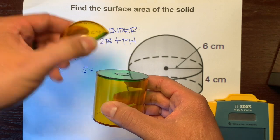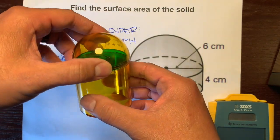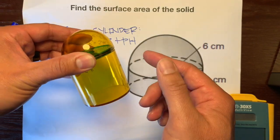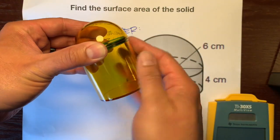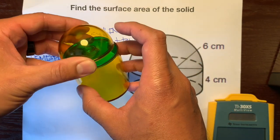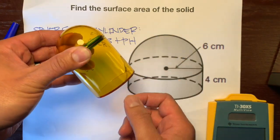But when we take this hemisphere and put it on top, see how it covers up one of the bases for this cylinder. We can't, there won't be any squares on the surface on this base. All the squares would be on the hemisphere and the rest of the cylinder.